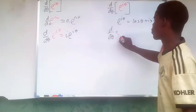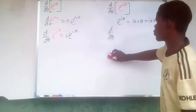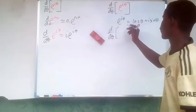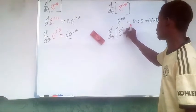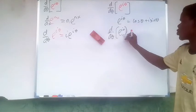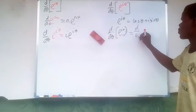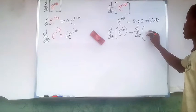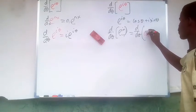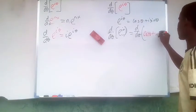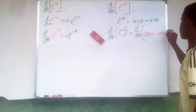The derivative with respect to theta of e to the i theta is just going to be the derivative with respect to theta of, we bring this in, cosine theta plus i sine theta.